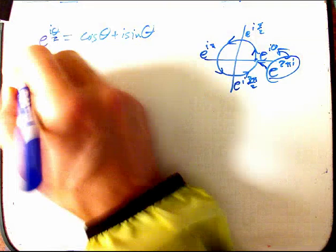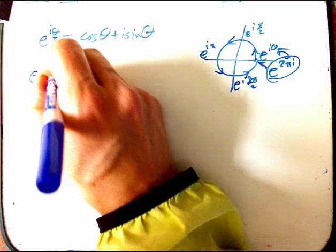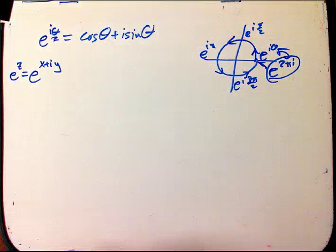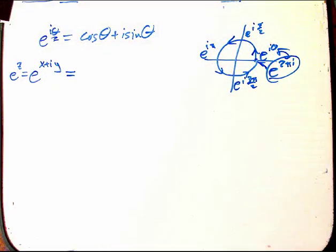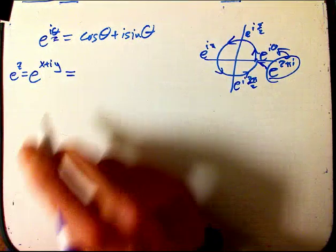So, what would happen if I took e to x plus i y? A totally general complex number, so e to the z, in other words. Well, should that make sense? Well, absolutely. All we have to believe is that the usual rules for exponents hold, and you can prove that from whatever definition you want to use of the exponential function. There's a few. Power series is usually the one people use, but I'm not going to worry about that too much.